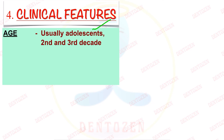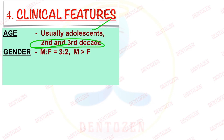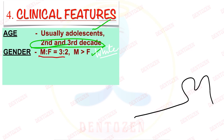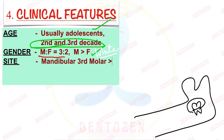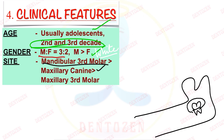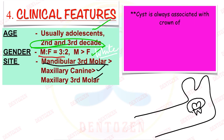Clinical features: usually seen in adolescence; most common age is the second and third decade of life. Males are more affected — male to female ratio is 3:2. Some studies show higher incidence in the white population. The most common site is the mandibular third molar region, followed by the maxillary canine, maxillary third molar, and secondary molars.